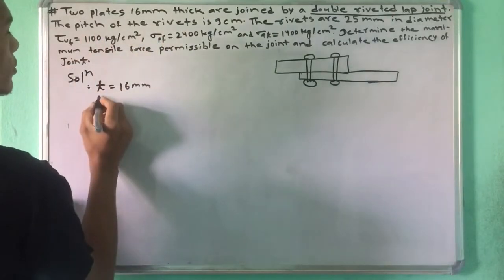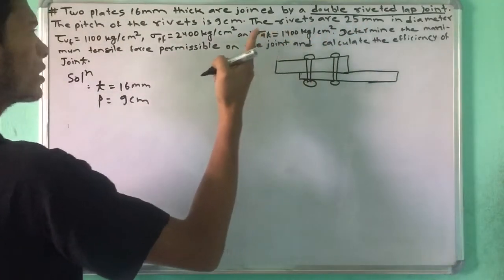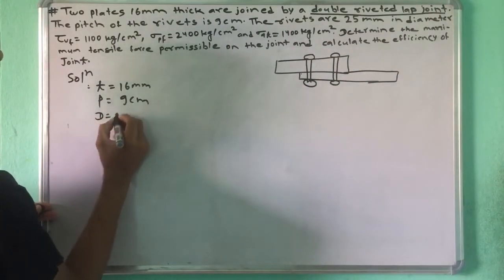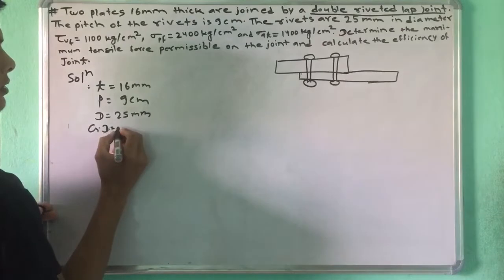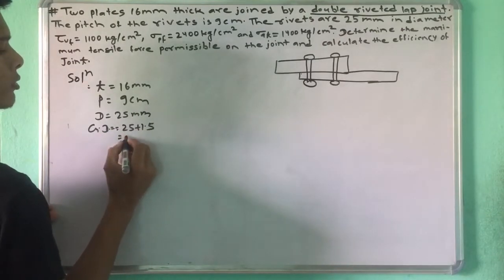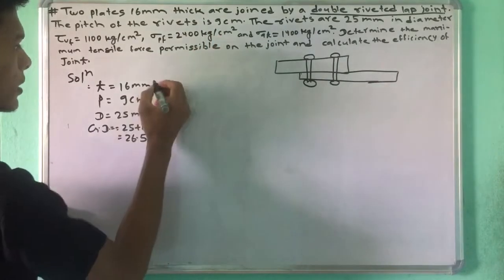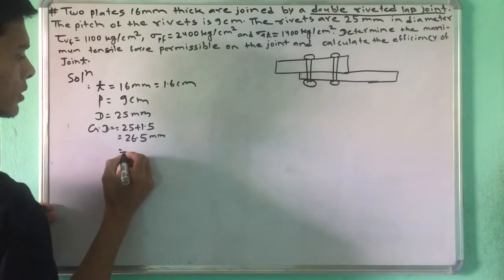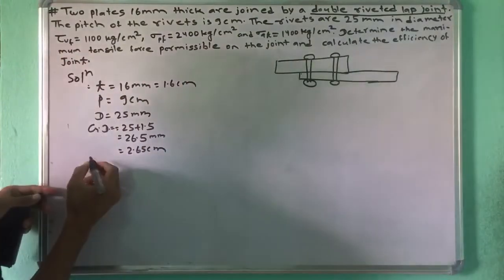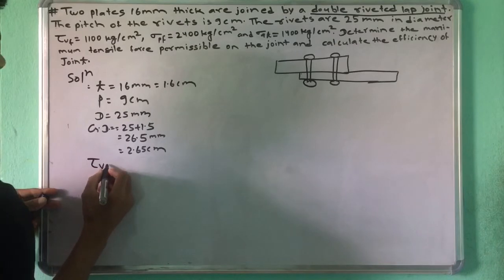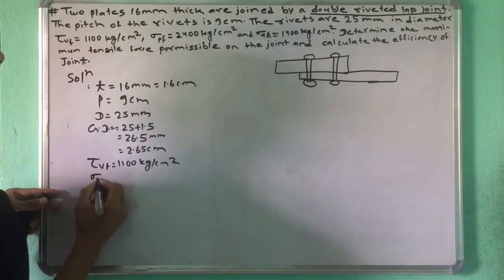P is equal to 9 cm. This is the diameter — the diameter is 25 mm. So 25 plus 1.5 gives gross diameter of 26.5 mm, which is 2.65 cm. The gross diameter is 2.65 cm.